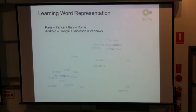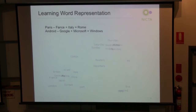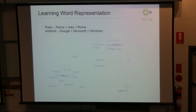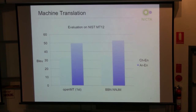For natural language processing, since 2003 people realized we can use neural network language models to learn word representations. Here's a visualization of word representations. Recently people found they can do simple arithmetic operations to infer meaning — for example, Paris minus France plus Italy gives you the word vector closest to Rome. Similarly, Android minus Google plus Microsoft becomes Windows. It's an interesting finding that people are still trying to understand more deeply; currently it's based on empirical observation.